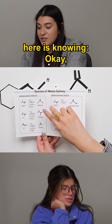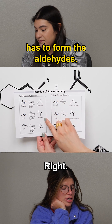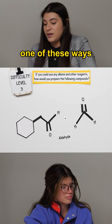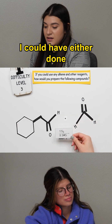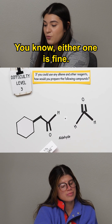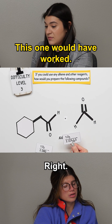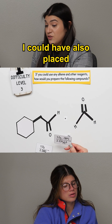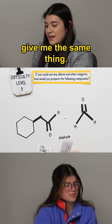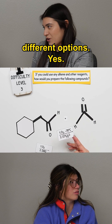The main thing here is knowing that at least one of these has to form the aldehydes. So I could have said at least one of these ways — I could have done this ozonolysis or maybe this one. Either one is fine. I could have also said this one would have worked, done the same thing. I could have also placed some negative Celsius degrees and that could also give me the same thing. This is still correct. This is still correct. There are just several different options.